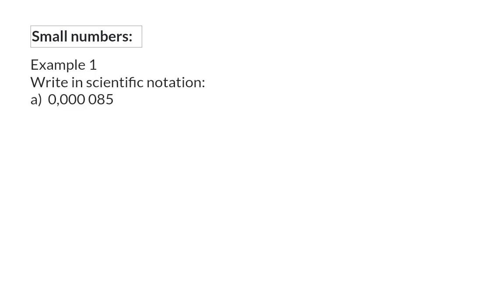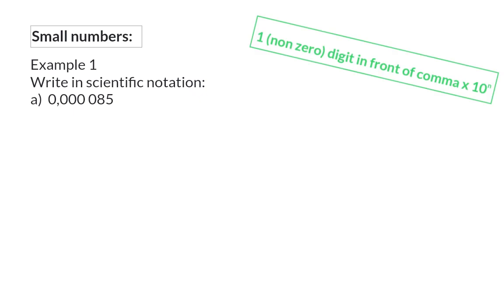Next, we're going to have a look at how to write small numbers in scientific notation. We are given a very small number and asked to write this in scientific notation. The basic principle that we want one non-zero digit in front of the comma will still be applied. So we are going to move the comma to directly after the 8, because 8 is the first digit that is not a 0. This means that we will start off with 8,5. But because we have a small value, we are going to have to divide by 10 a specific number of times, because every time you divide by 10, you make the value smaller. Here we moved the comma 1, 2, 3, 4, 5 spaces, so we will have to divide by 5 tens to have the original value.